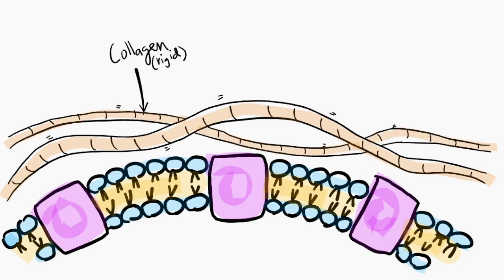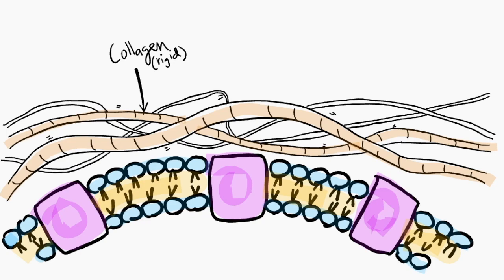Collagen is the most abundant protein in the extracellular matrix and it functions in the resistance of stretching. On the other hand, elastin provides the elasticity to tissues, allowing them to stretch and return to its original shape afterwards.